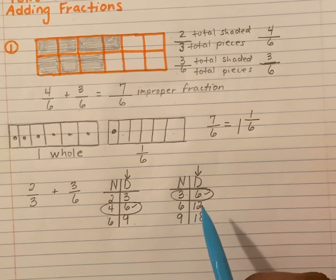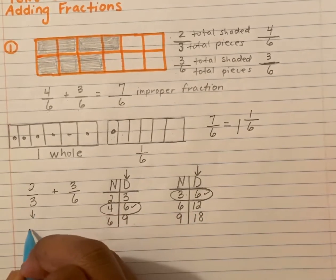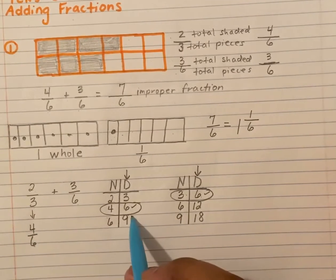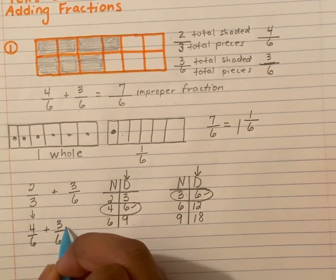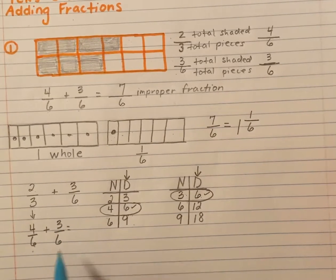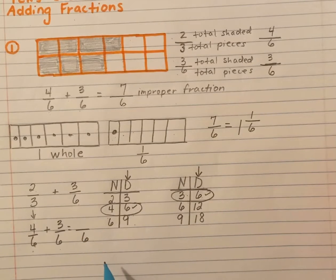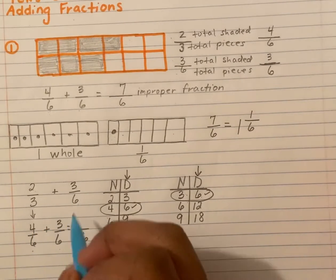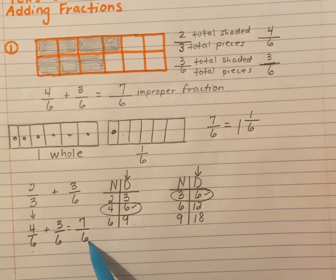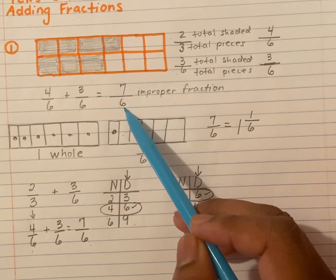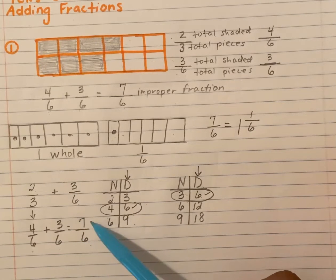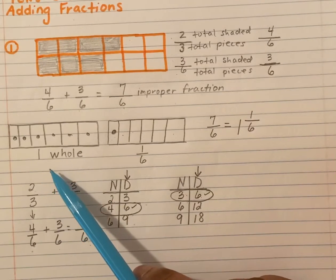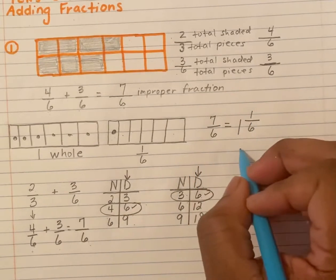We have now found our common denominators, so we're going to change this to four over six plus three over six. We do not add the denominators, so six stays the same, but we do add the numerators: four plus three equals seven. We got the same answer here that we got with the picture method. The only difference is that on this one we used the picture; here we used the ND chart. Remember, we will not leave it as an improper fraction — we would create a picture to change it to our mixed number.